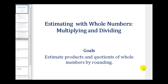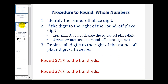Let's do a quick review on how we round whole numbers. The first thing we do is identify the round-off place digit. For these two examples, we want to round to the hundreds, so in both cases the seven is in the hundreds place value. Next, the digit to the right of the round-off place value tells us whether to round up or round down. For this first number, the three tells us to round up or down.